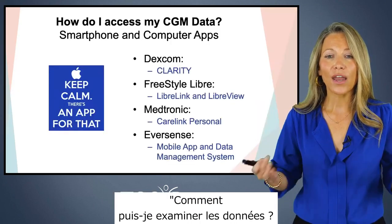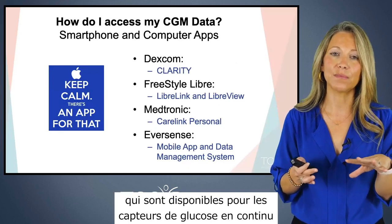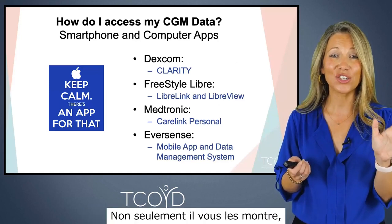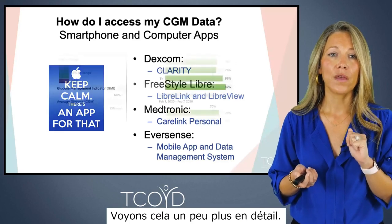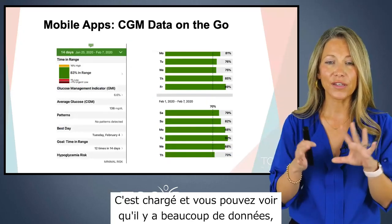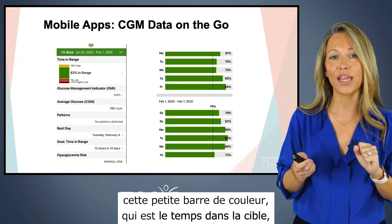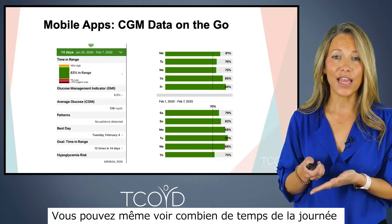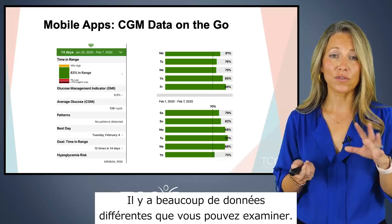All the different CGM systems available have an app you can download that shows you your data and even analyzes it for you. This is an example of a mobile app for a continuous glucose monitor. It's a lot of data, but just by pulling it up on your phone, you can get a time-in-range color bar, an estimated A1C, and see how much of the day you spent in a safe glucose range each day of the week. There's lots of different data to look at.